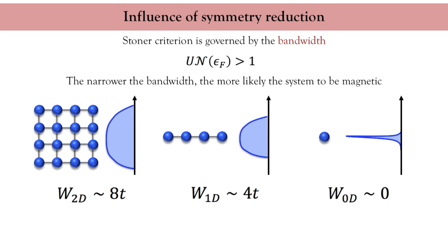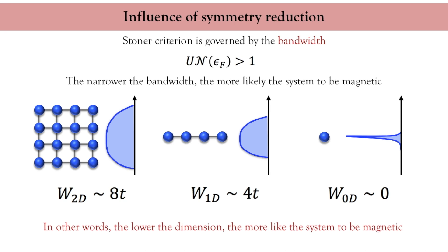Finally, in the atomic limit, the density of states is nothing but a Dirac delta function with zero width. These three cases show that reducing the dimension of a crystal from 3 to 2 to 1 reduces the bandwidth. Based on Stoner criterion, this means that small objects and surfaces are more likely to display magnetism than bulk materials.